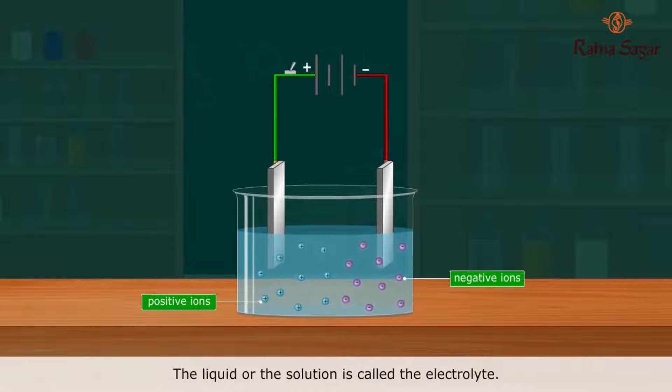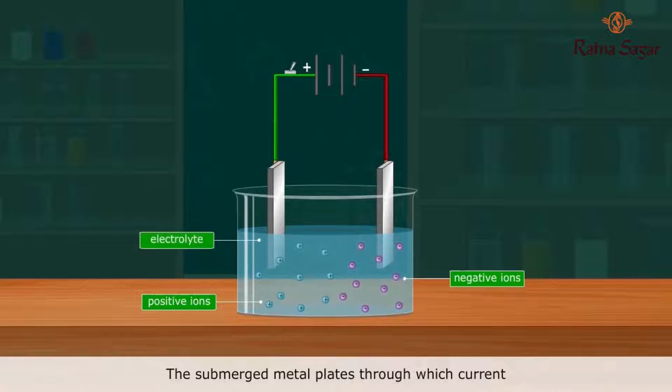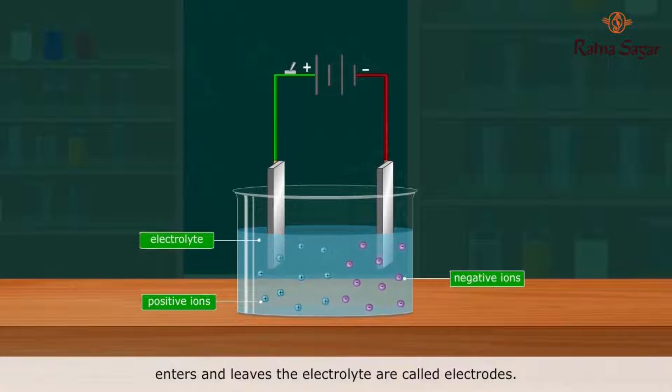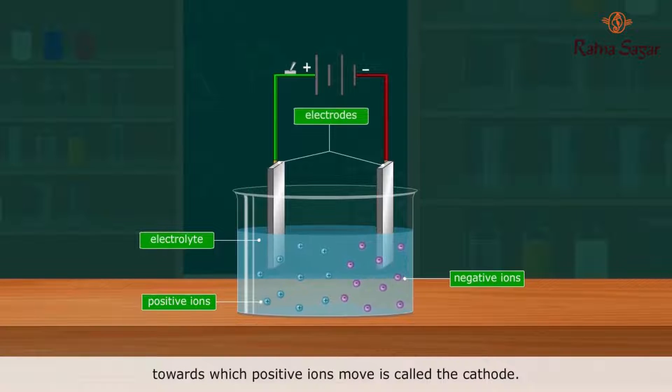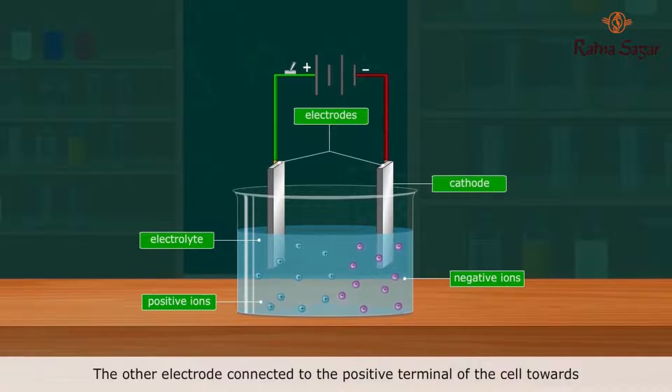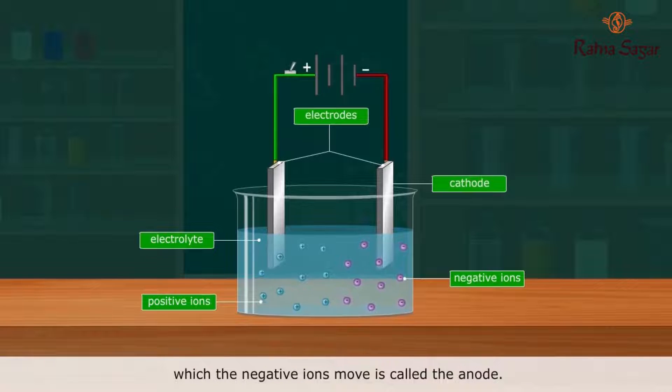The liquid or the solution is called the electrolyte. The submerged metal plates through which current enters and leaves the electrolyte are called electrodes. The electrode connected to the negative terminal of a cell towards which positive ions move is called the cathode. The other electrode connected to the positive terminal of the cell towards which the negative ions move is called the anode.